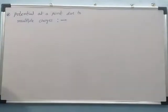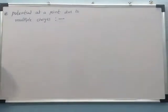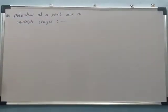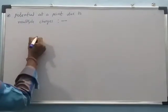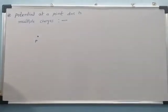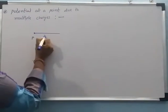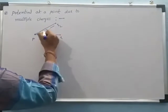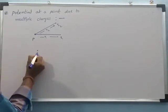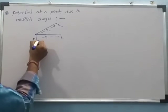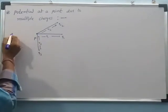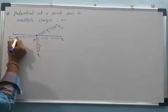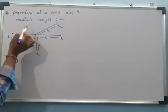Next, we discuss the topic: potential at a point due to multiple charges, also called a system of charges. Let us consider P is a point. We consider charge q1 at distance r1, charge q2 at distance r2, charge q3 at distance r3, and so on up to charge qn at distance rn from point P. We can then find the resultant electric potential at point P.